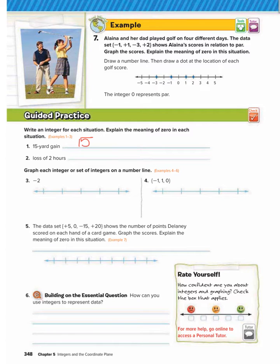Number two, a loss of two hours. The integer to represent this would be negative two because it's a loss. Zero in this situation would be no loss or no gain of hours, meaning no time has gone by.